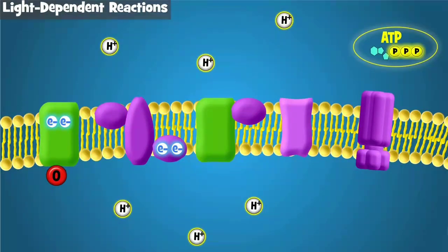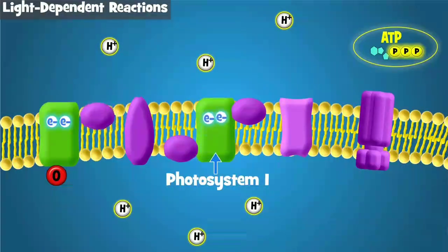This ATP is a key product of the light-dependent reactions. When the electrons reach the end of this first electron transport chain, they go to photosystem 1, where light excites them once again.